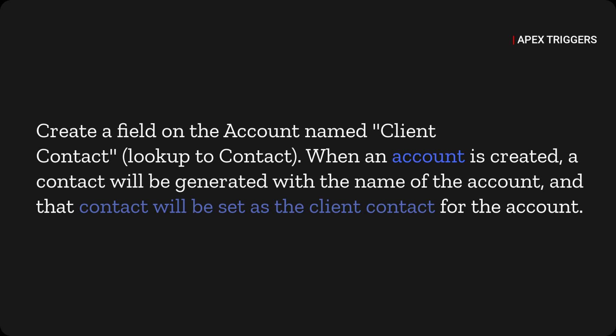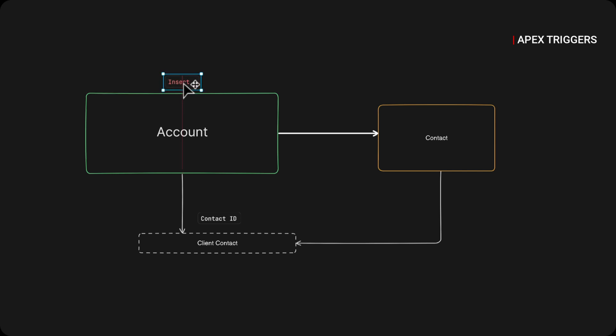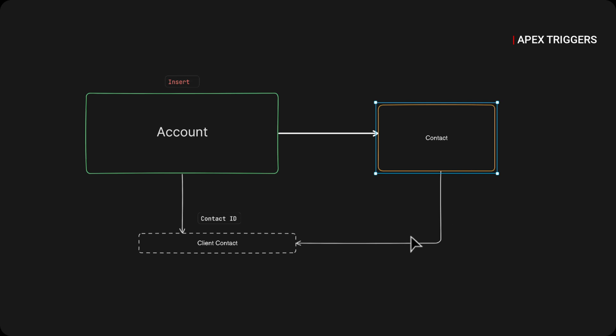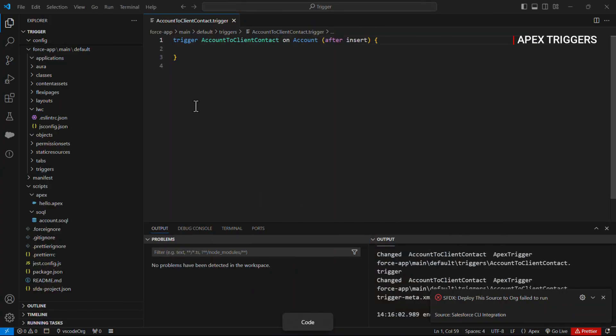Hello guys, so in this video we are going to write a trigger on account. When an account record is inserted, a contact record should also be inserted and the contact record ID should be populated on an account record in a field called 'client contact'. So when an account record is inserted, after the account creation we will create a new contact record and pass the contact ID to the client contact field on the account object.